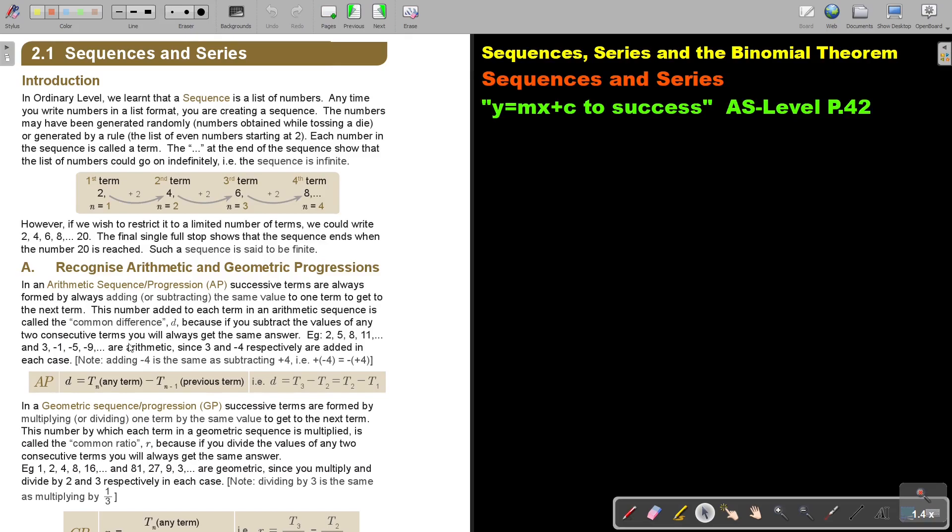Because if you subtract the values of any two consecutive numbers, you will always get the same answer. So, for example, if you look here, 2, 5, 8. 5 minus 2 is 3. 8 minus 5 is 3. 11 minus 8 is 3. Or negative 1 minus negative 3 is negative 4. They are both APs. Since 3 and negative 4 respectively are added in each case. Note, adding negative 4 is the same as subtracting positive 4.